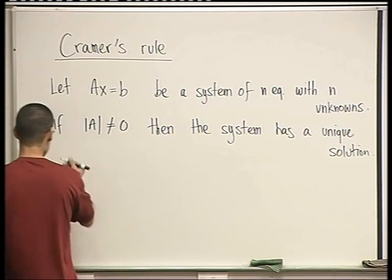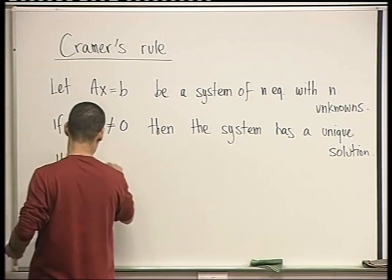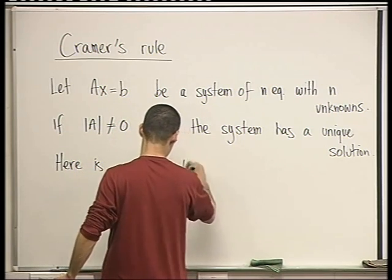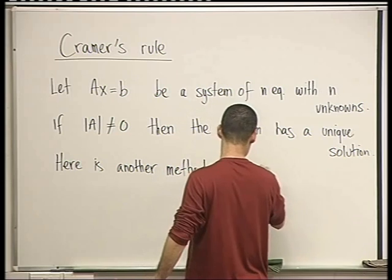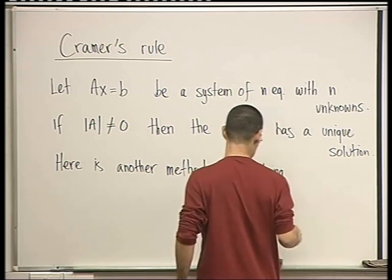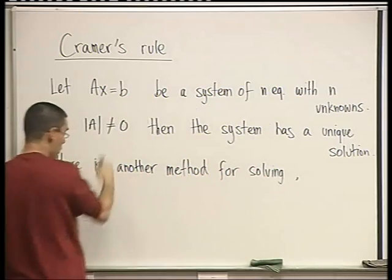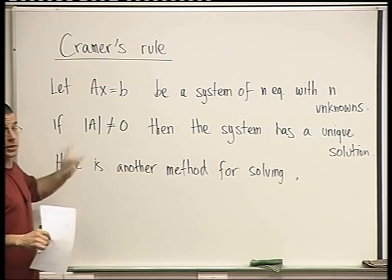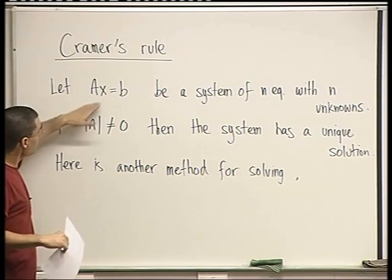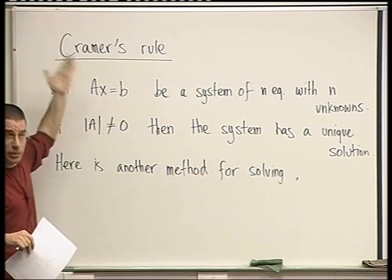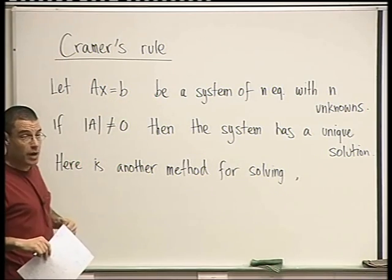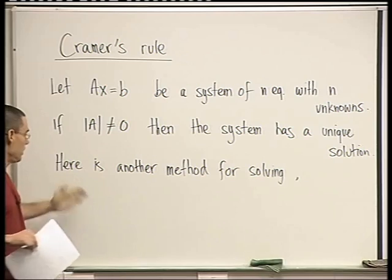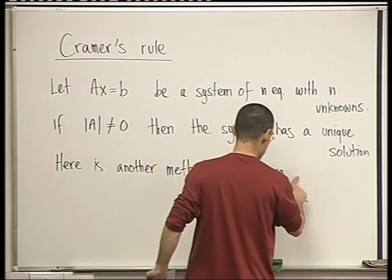And here's another one. So here is yet another method for solving. And the advantage of it is that we can write a formula for x, write the solution explicitly. And when we wrote x equals A inverse B, that was also explicitly, and now we even know a formula for A inverse in terms of the Adjugate matrix, so it's yet another method. So here is another method for solving.